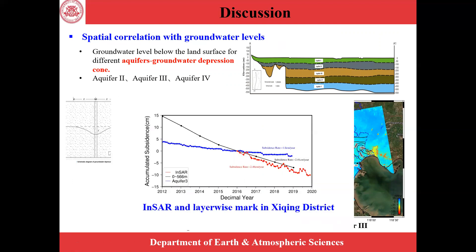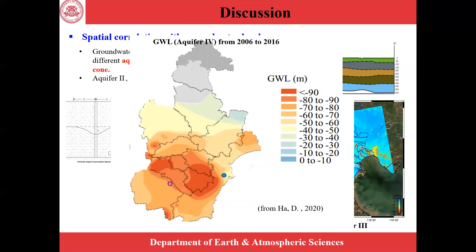We also extracted the subsidence rate from our corrected results at the layerwise marker locations in the district, and compared these results with the accumulated subsidence to a depth shallower than 566 meters below the land surface and the accumulated subsidence in aquifer 3. Our results correlate well with the layerwise markers, proving the reliability of our results. However, we found that the total subsidence is larger than the aquifer 3 subsidence alone, meaning that aquifer 4 also has a great influence, which has been confirmed by previous studies.